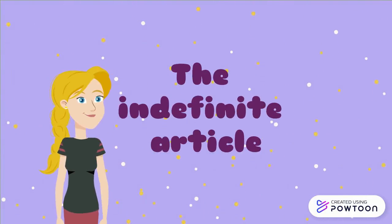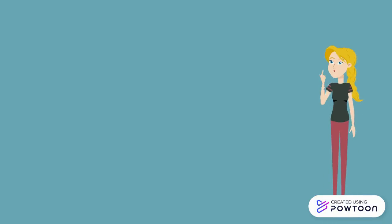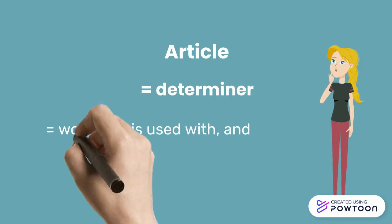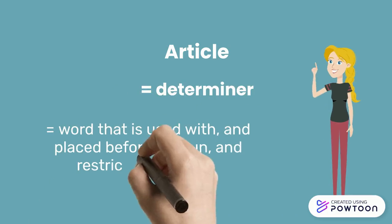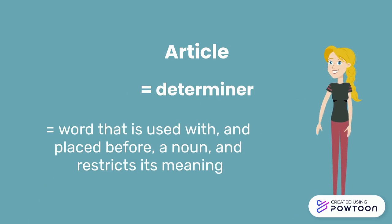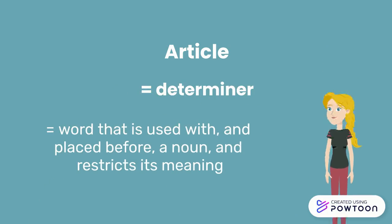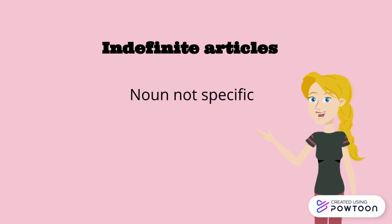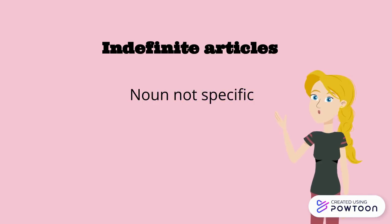Bonjour! In today's video I'm going to talk about another type of articles: the indefinite article. As a reminder, an article is a class of determiners. It is a word that is used with and placed before a noun and restricts its meaning. Indefinite articles indicate that the noun to which they refer is not specific, unlike definite articles.